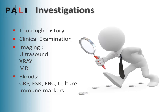For investigations, it's important to do a thorough history and clinical examination of the musculoskeletal system and other systems if you suspect arthritis or cancer. Ultrasound is particularly good for young children whose bones haven't fully ossified, as x-rays aren't great at picking that up — it's also good for detecting pus or fluid around the joint. X-rays are good for fractures. MRI is good for most things but not readily available. Blood tests — CRP, ESR, full blood count, cultures, and immune markers — are useful when considering septic arthritis or inflammation.